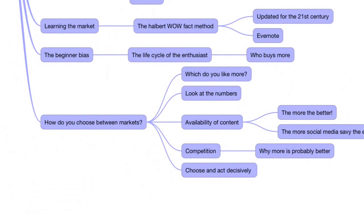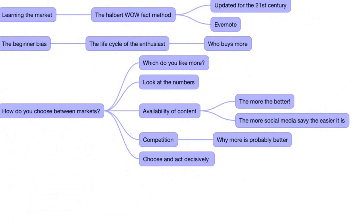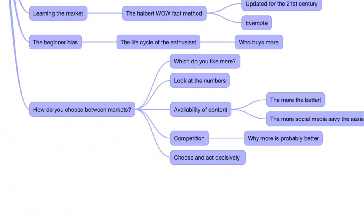And finally, you might have more than one market, so you've got to look at how do you decide. Which do you like more? Look at the numbers. Availability of content — the more the better. The more social media savvy the market is, the easier it will be to approach experts and become an influencer. I cannot tell you how incredible the stories are of people doing amazing things in their marketplace because they've been able to reprint wonderful content from industry major players — stuff people want to read, with no duplicate content issue in a magazine.